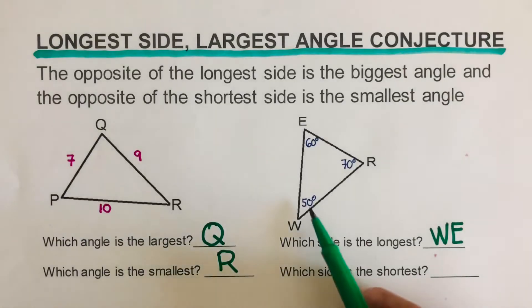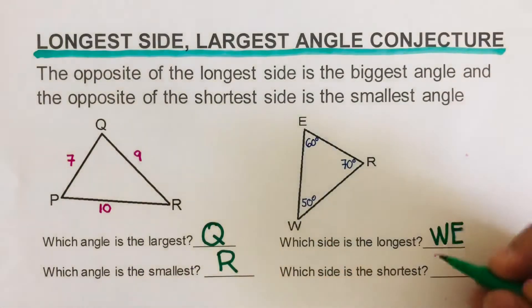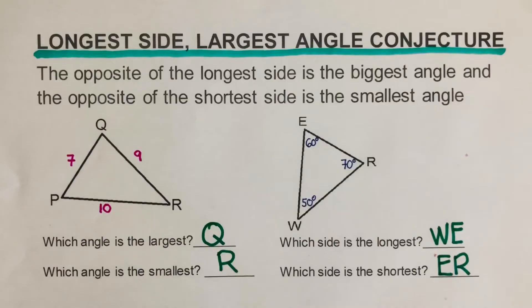The shortest side is across the smallest angle, 50. So that is ER, the shortest side since 50 is the smallest angle.